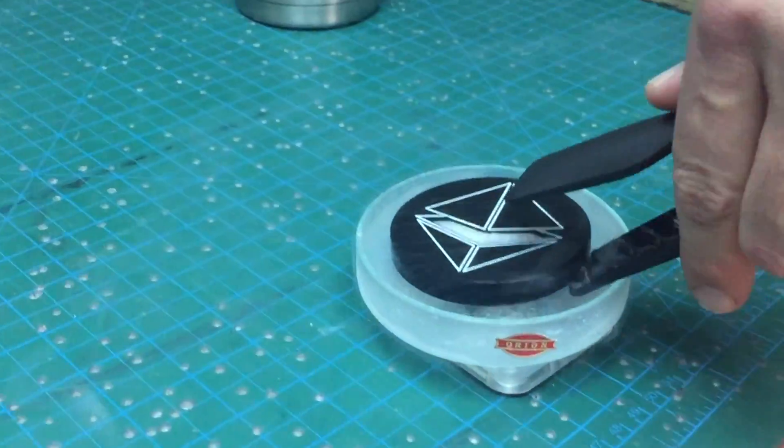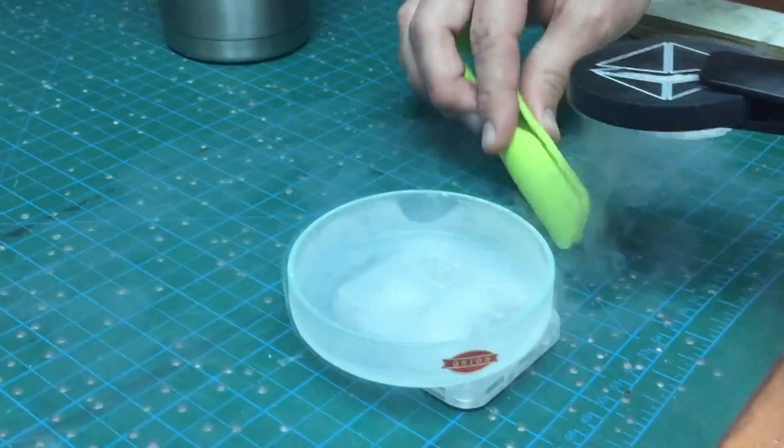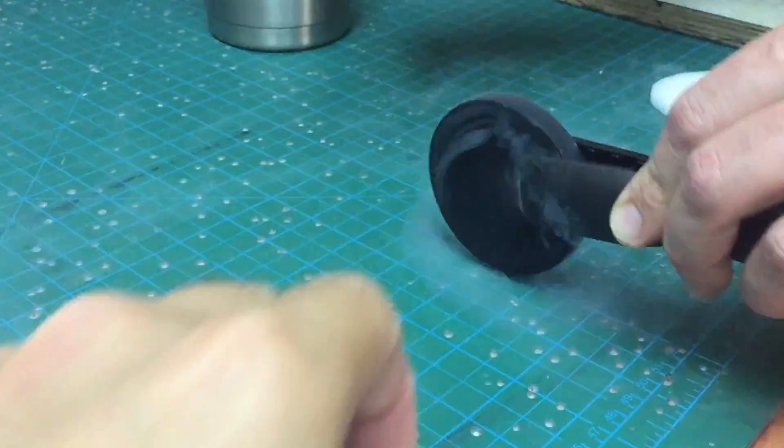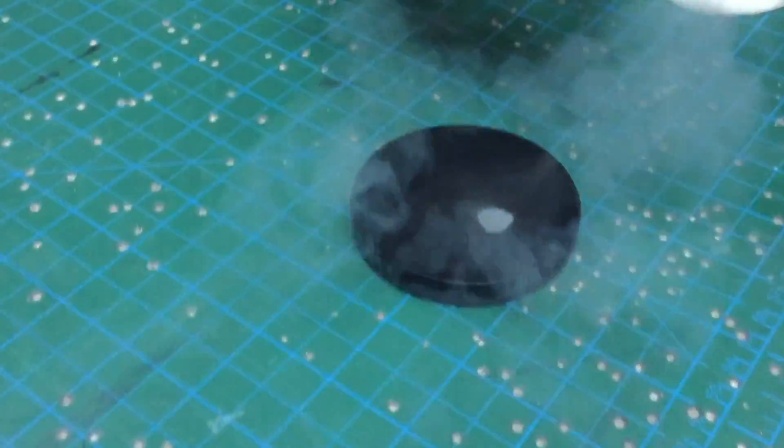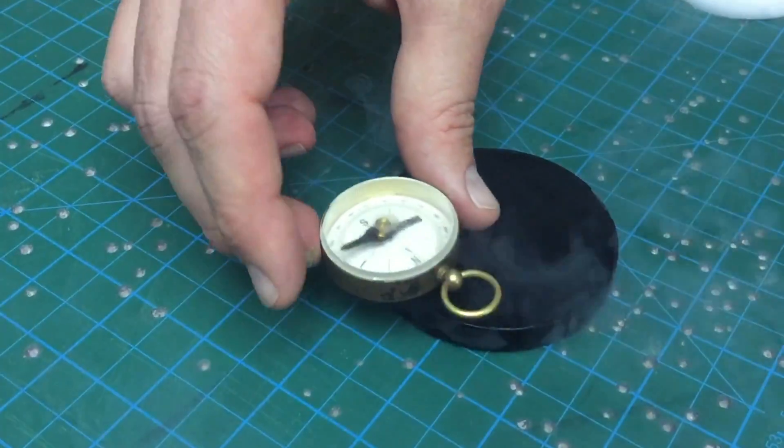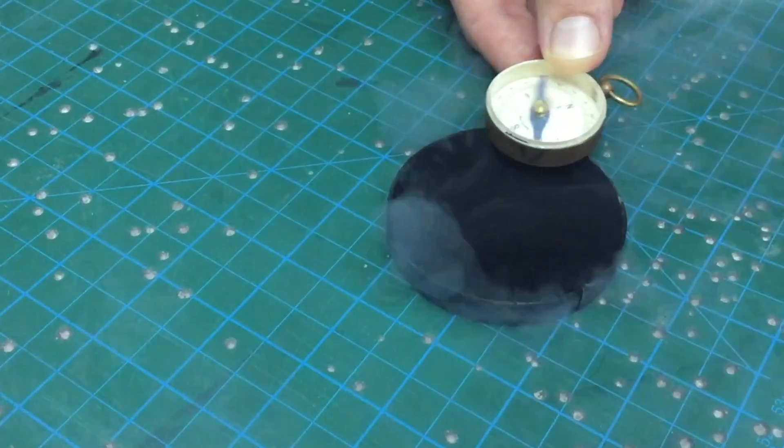We can also remove the superconductor from the magnetic field and, with a compass, demonstrate that there are still screening currents inside the superconductor, even without the presence of the magnets.